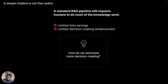The agent powering this RAG pipeline is not directly producing the output that the knowledge worker is responsible for. At best it's just a simple lookup tool, almost like an internal Google search. In this naive or basic RAG setting, we're still requiring humans to do most of the knowledge work and therefore not really saving them that much time.